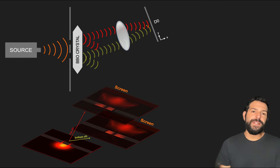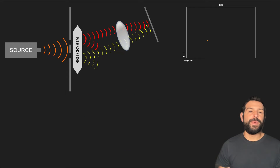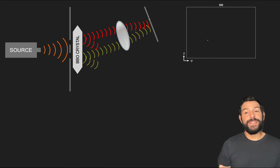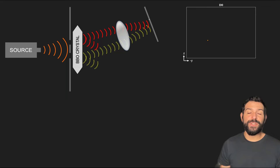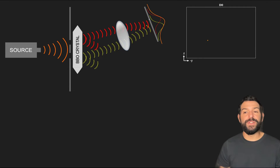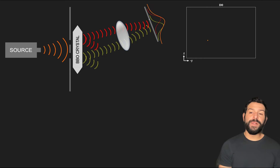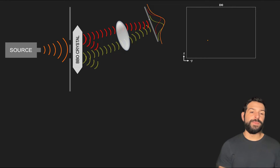So in the end, what we have are these two separate branches of the global wave function traveling and reaching the screen, where the particle will be localized at a given spot. Now by simply looking at the screen, we can't really tell with certainty which of these two waves determined the particle's location. Since the probability densities of the two single slit wave functions overlap, there will be some probability associated with the particle having gone through the top slit or the bottom slit.